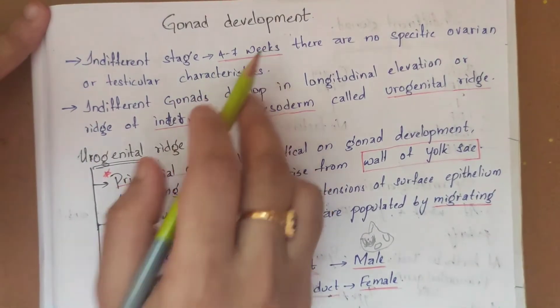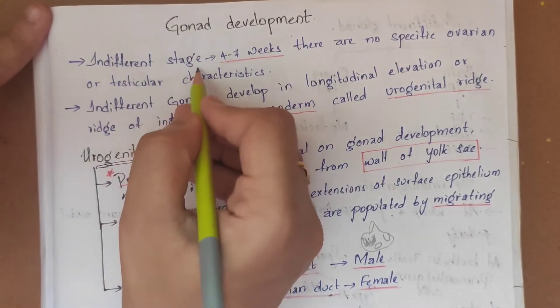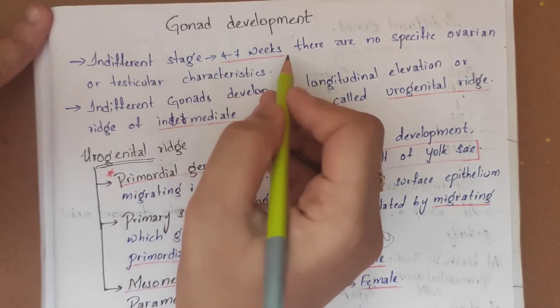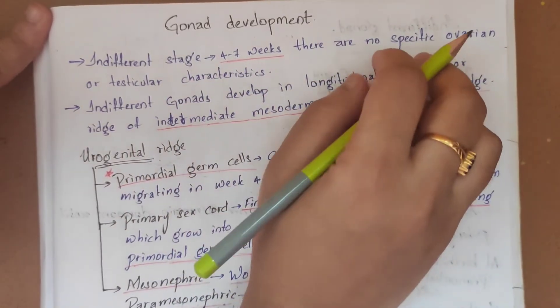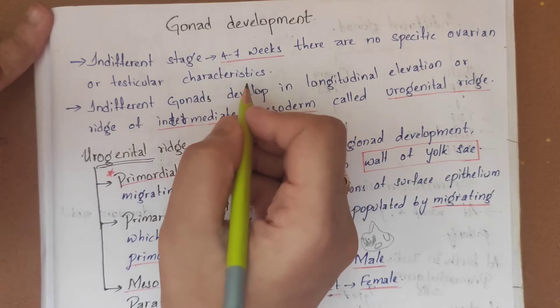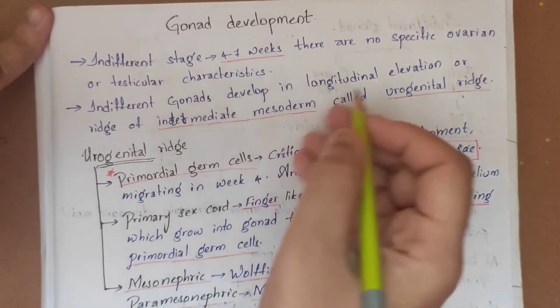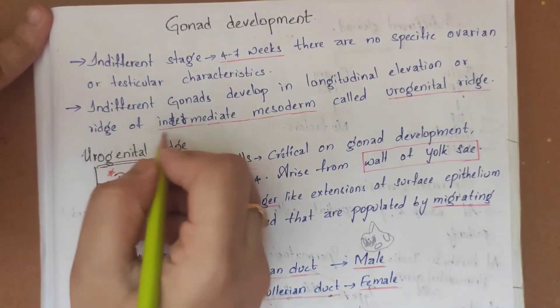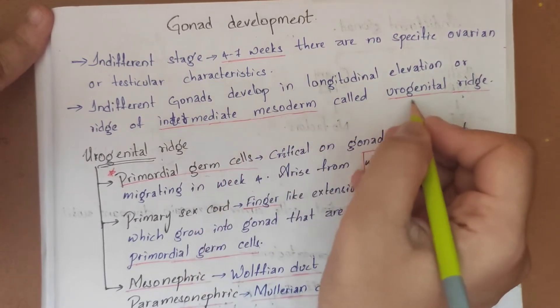Gonad development occurs at different stages between 4 to 7 weeks where there are no specific ovarian or testicular characters. The indifferent gonad develops in a longitudinal elevation or ridge of intermediate mesoderm called the urogenital ridge.